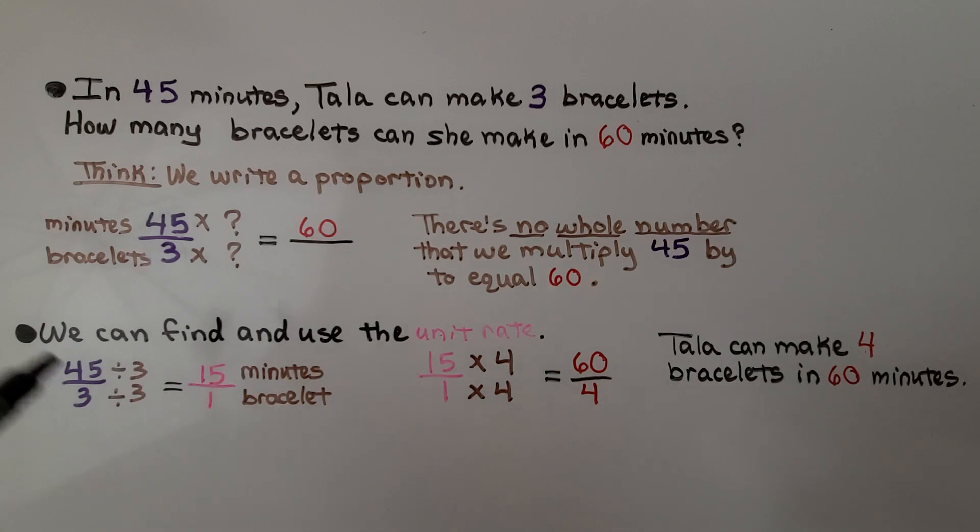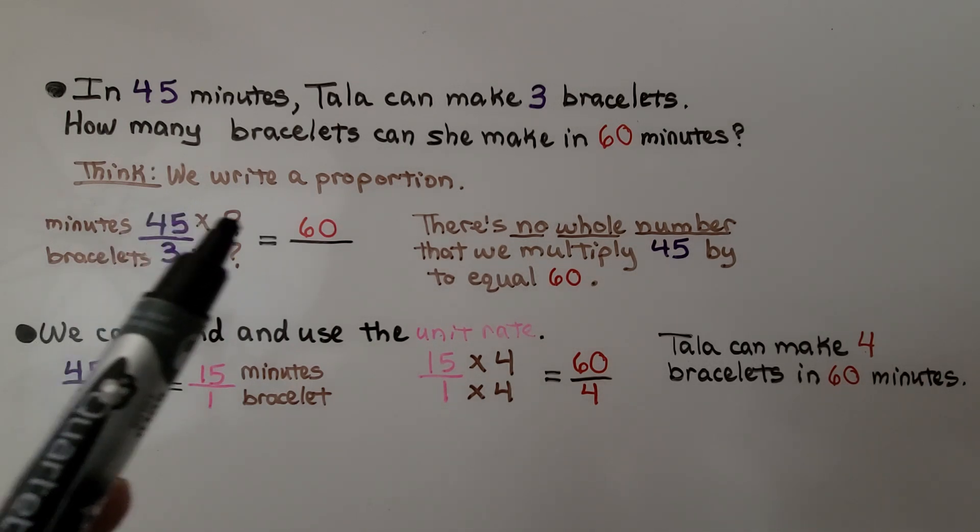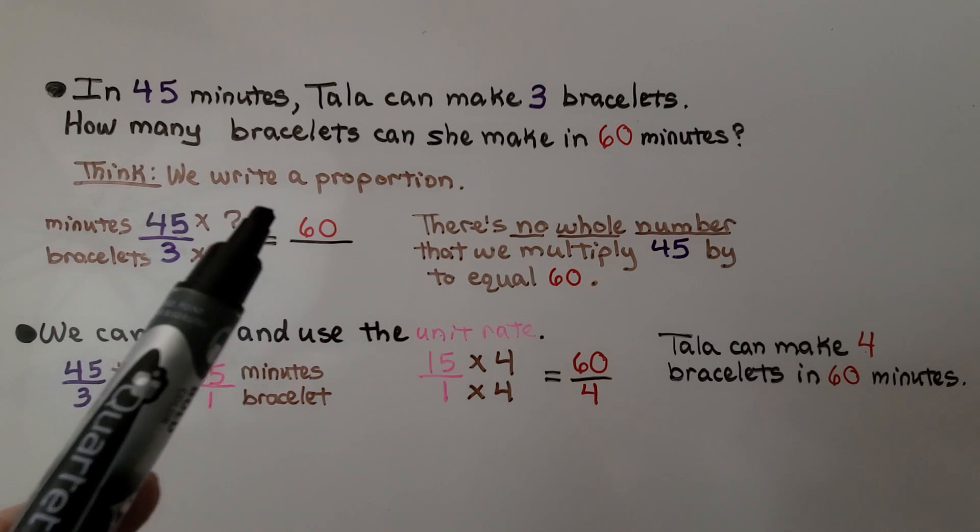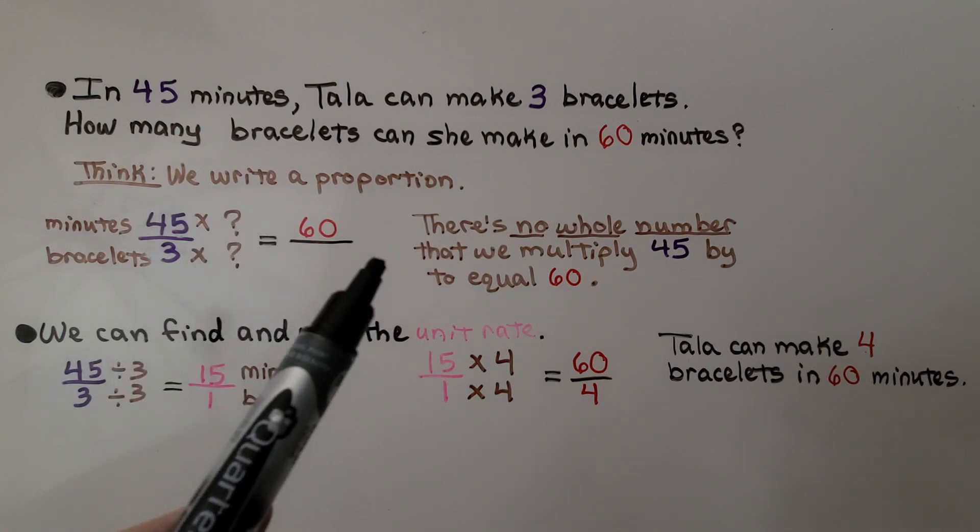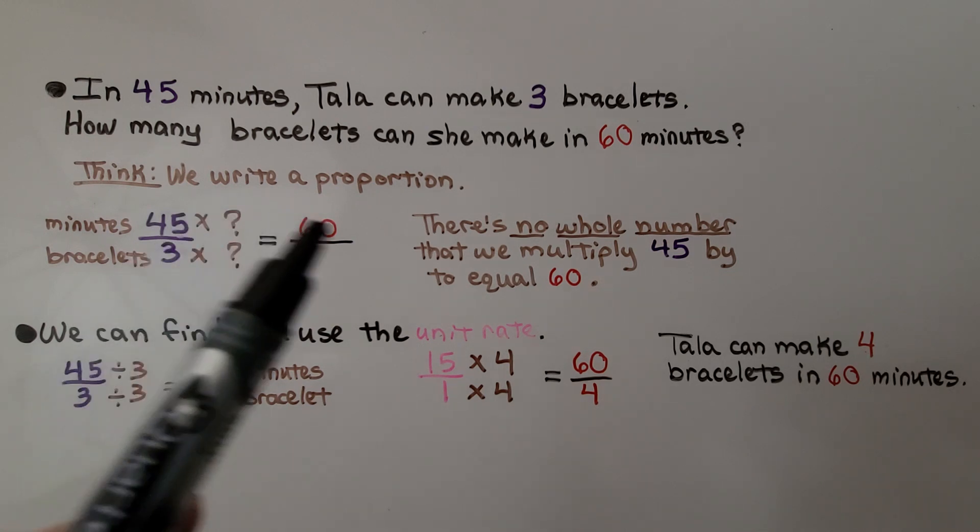In 45 minutes, Tala can make three bracelets. How many bracelets can she make in 60 minutes? So we think, we write a proportion. 45 minutes, three bracelets. And what can we multiply 45 by to equal 60? There's no whole number that we can multiply 45 by to equal 60.